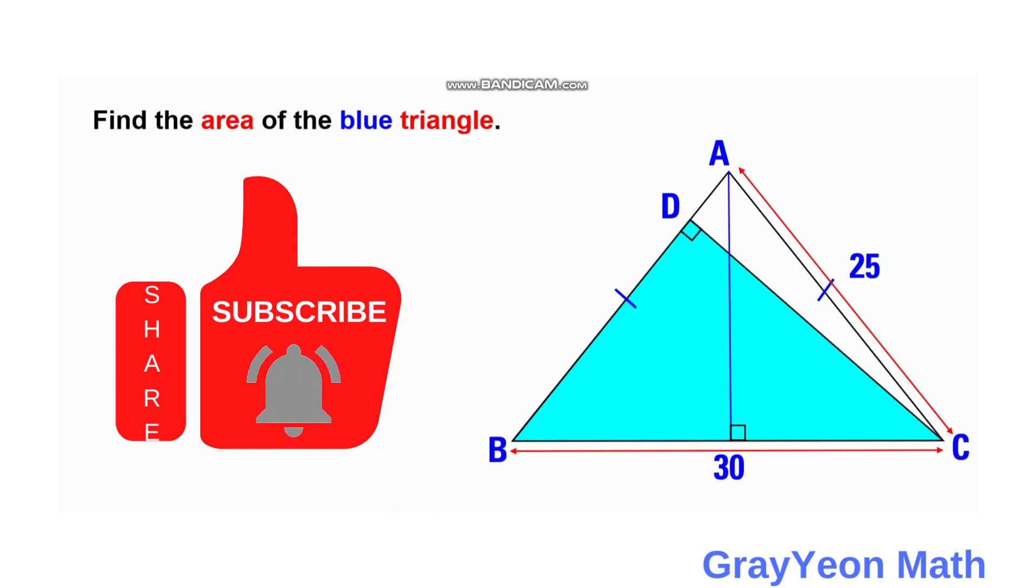We are given an isosceles triangle, and this isosceles triangle inside has a right triangle in it. This right triangle is a blue region, and the base of this isosceles triangle is 30, and one side is 25. We are required to find the area of the blue triangle.